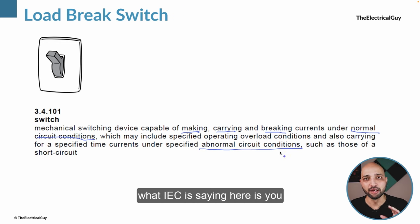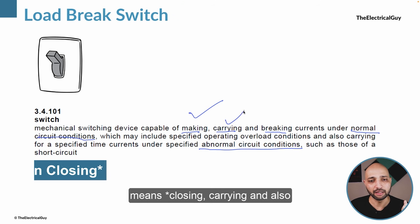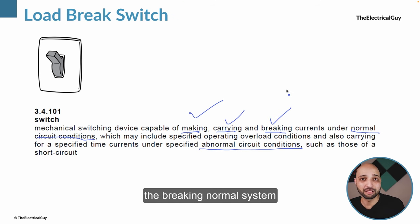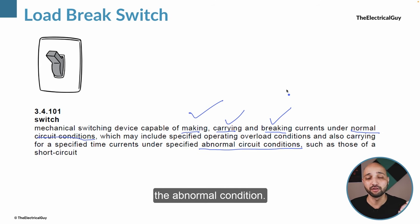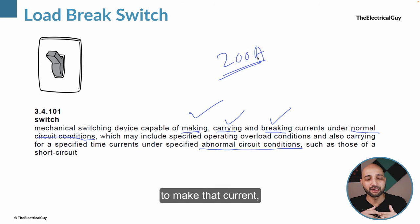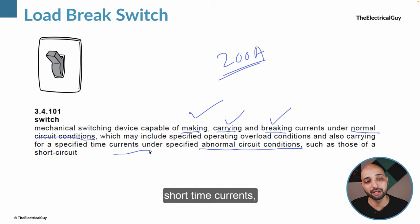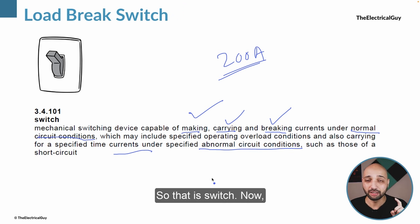IEC is saying that you can call something a switch when it has the capability of making, carrying, and breaking normal system current — not abnormal current, normal current. So if your system's normal current is 200 amperes and your switch is able to make, break, and carry that current, it can be called a switch. Additionally, the switch will have capability to carry short-time currents which can occur because of faults for specified time limits.